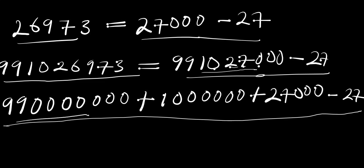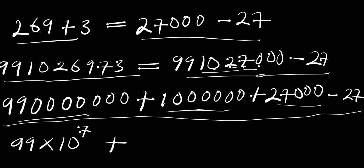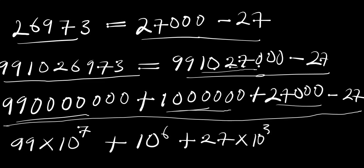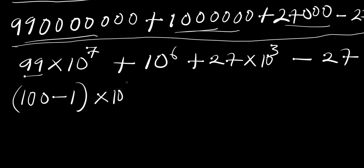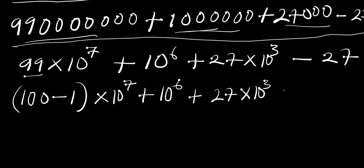Now what we are going to do is express this in standard form. So we are going to have 99 times 10 raised to the power of 7, plus 10 to the power of 6, plus 27 times 10 to the power of 3, then minus 27.